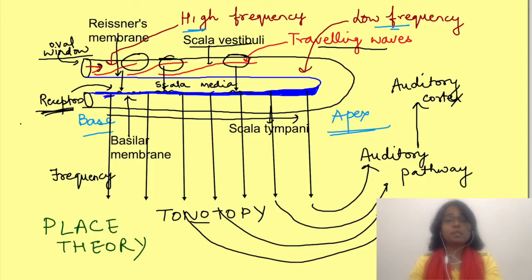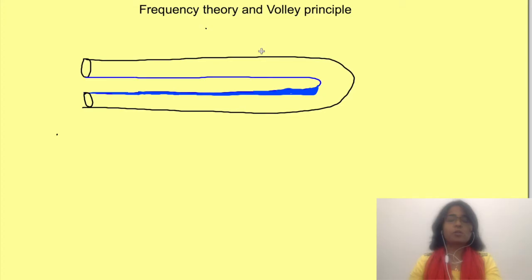But the ear has to encode frequencies from 20 Hz to 20,000 Hz. Imagine the entire range being represented in this small area of basilar membrane. Place theory is not enough to encode all the frequencies. Instead, pitch coding also occurs by two more mechanisms: frequency or temporal theory, and volley theory.